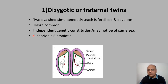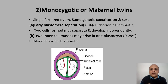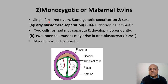In dizygotic twins, the scenario is bichorionic bi-amniotic as shown in the figure. Each fetus has a separate amniotic cavity and a separate chorion. This is the common case with twinning. Monozygotic twins are also formed — they arise from a single fertilized ovum.